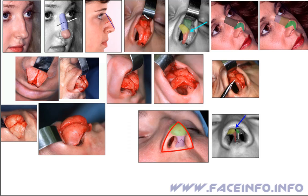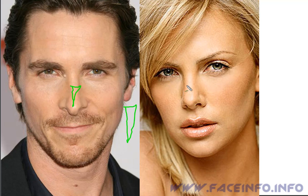The form and shape of the upper lateral nasal cartilages have a great impact on nose shape. For example, Christian Bale's cartilages are long, so his nose is longer. While Charlize Theron's are shorter, and her nose is smaller and shorter.